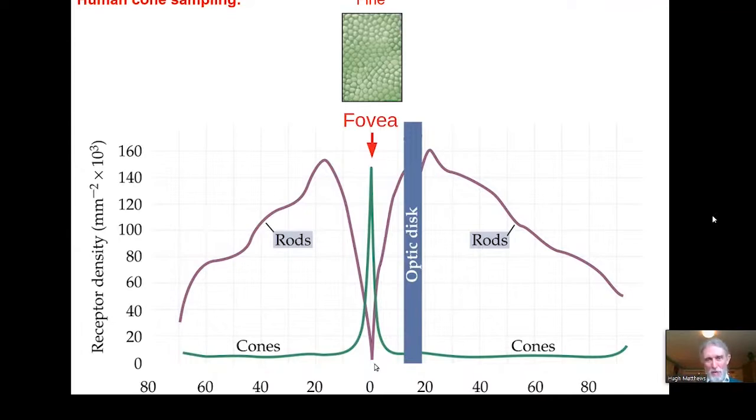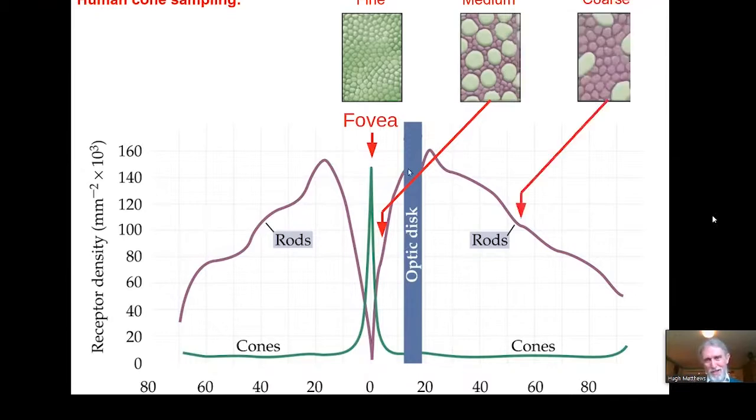But as we move away from the fovea, the density of cones falls away precipitously, and the density of rods rises. So at about that point there, we've got rather sparsely packed, bigger cones, and little rods, the purple ones, packed in between them. And if we move to the periphery of the retina, the cones are very sparse indeed. And most of the receptors we see will be rods.